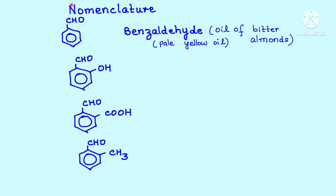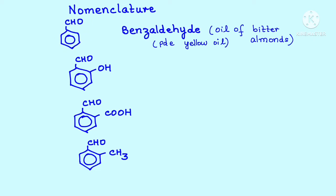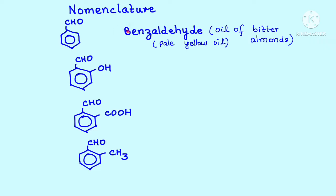We start with the nomenclature of aldehydes and ketones — first, the nomenclature of aromatic aldehydes. If you remember from our earlier videos, I had told you that in the case of aromatic compounds, a lot of the common names have been accepted by IUPAC to be used as scientific names. So the same applies for benzaldehyde: C6H5CHO is benzaldehyde, accepted as the IUPAC name.